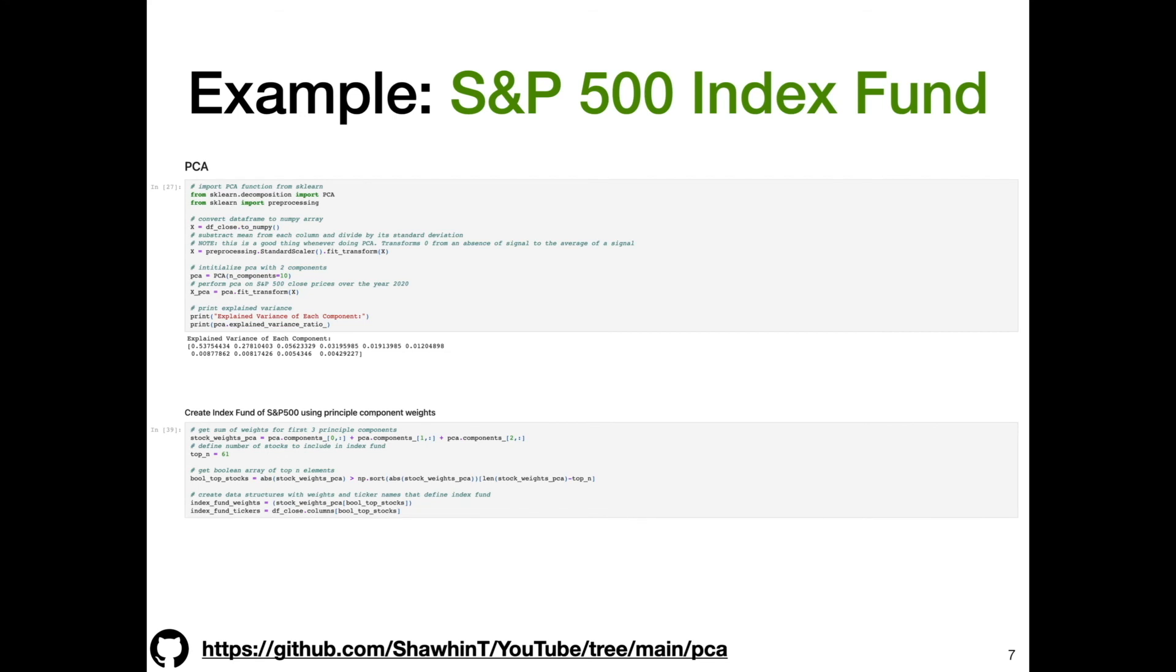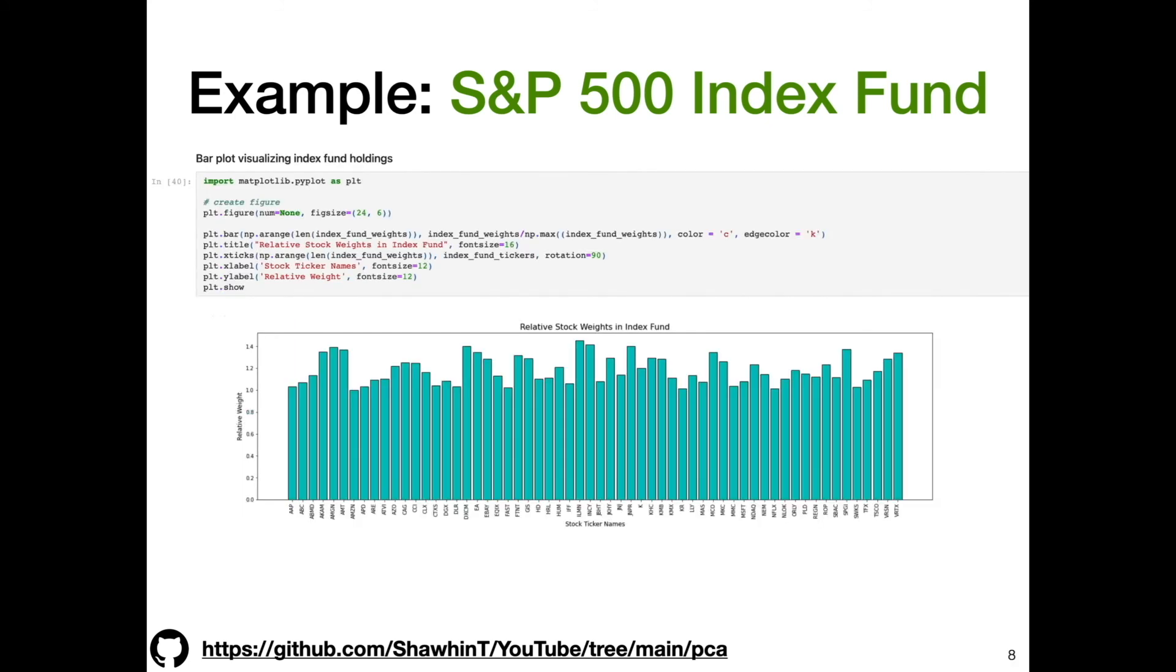Then we can create an index fund. There's countless ways you can do this. I just arbitrarily took the weights defining the first three principal components, summed them together, and then I only included the top 61 weights. We can represent the overall portfolio of this index fund with a bar plot. The y-axis is the relative weight—you can also think of this as the relative number of dollars you're going to invest in each specific company, and then the x-axis is just the individual ticker names.